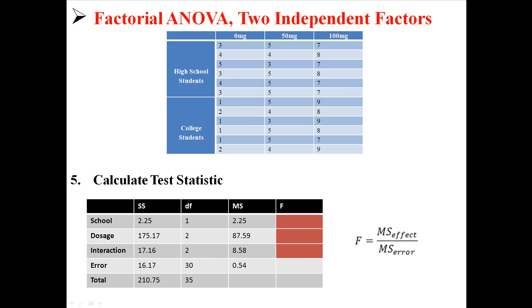And now we need to find our three F statistics to test our three hypotheses. Now our F statistics are always going to be MS effect divided by MS error. So for example, we're going to take the mean square for school and divide it by MS for error. We can take the mean square for dosage and divide it by the MS for error, and we're going to take the mean square for the interaction and divide it by the MS for error. So we get our three F statistics: 4.16, 162.20, and 15.89. And now we're almost done.